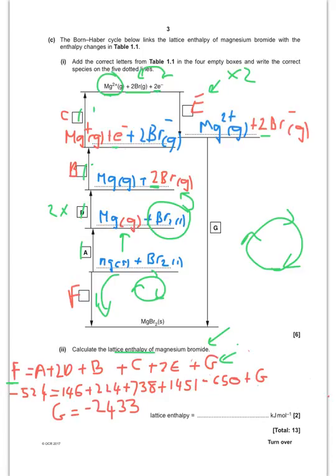So then you pop your numbers in, and you don't know G, and then you rearrange this to find G is equal to minus 2433 kilojoules per mole.